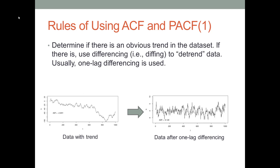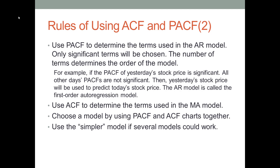After the detrend, we need to evaluate which model between AR and MA models we should use. We use PACF to evaluate the AR model, and only the significant PACF values will be chosen. The number of significant PACF values determines the order of the AR model. For example, if we find that yesterday's PACF value is significant, then in the AR model, we will choose yesterday's stock price to predict today's stock price. We call this model a first order AR model, because only one previous day is used to predict the current stock price.